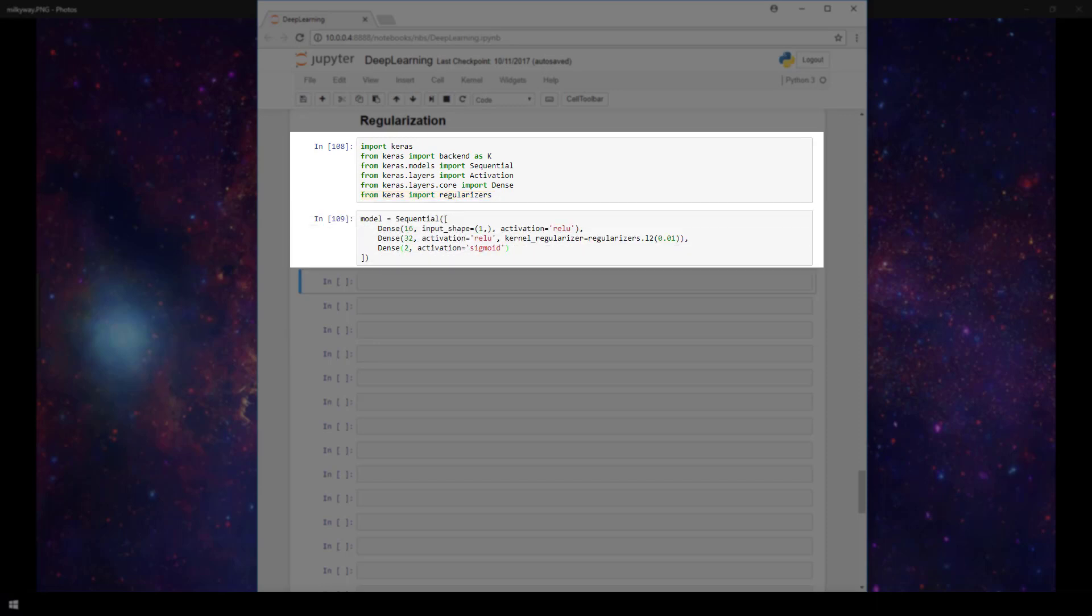In this next cell, I have a model we've worked with in previous videos. For all intents and purposes, this model is pretty arbitrary. We've got two dense layers with 16 and 32 nodes respectively, with both using ReLU, and an output layer with two nodes for classification using the sigmoid activation function. Now there's only one difference in this model from how it was in other videos that we've seen it in. The difference here is within our second hidden layer that has 32 nodes. I've added this kernel_regularizer parameter.